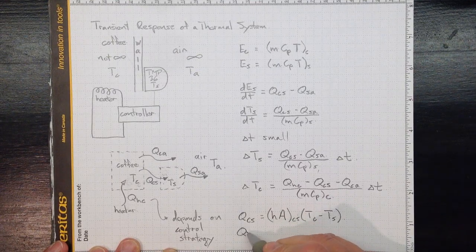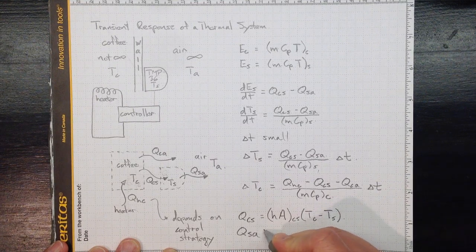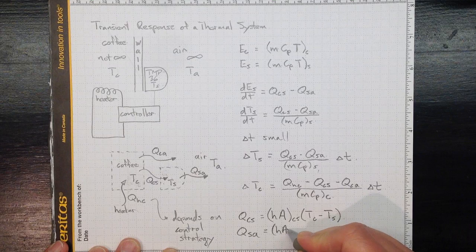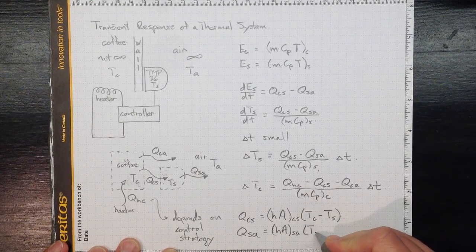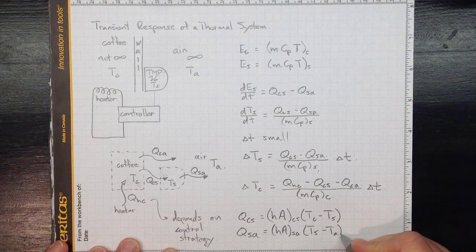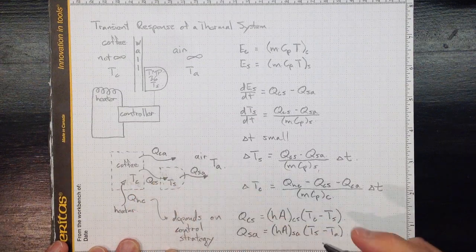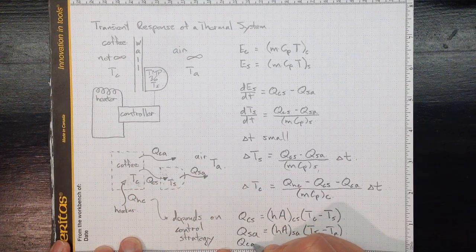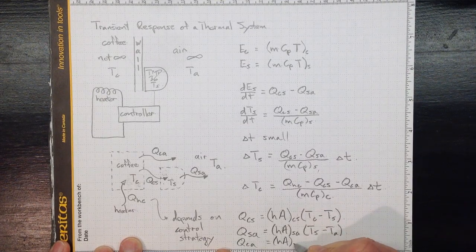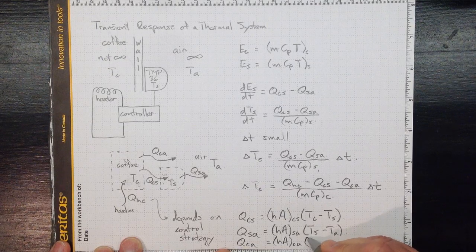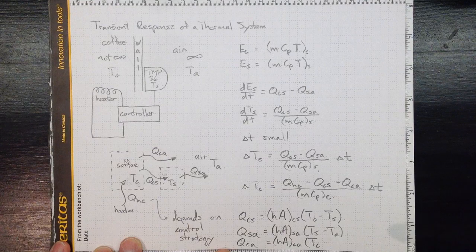Likewise, the heat transfer from the sensor to the air, just like before, HA from the sensor to the air times the temperature of the sensor minus the temperature of the air. And finally, from the coffee to the air will be HA from the coffee to the air times the difference between the coffee temperature and the air temperature.